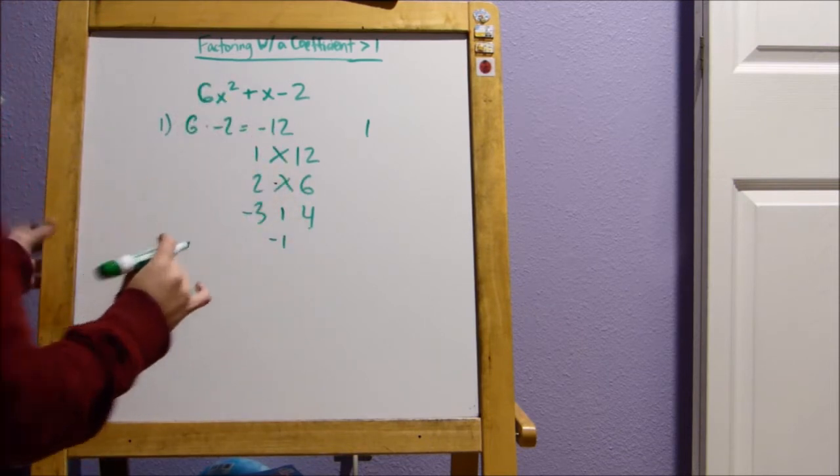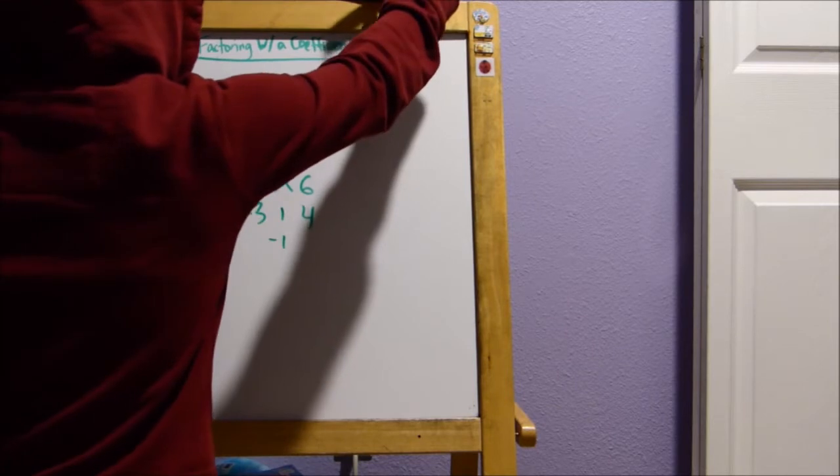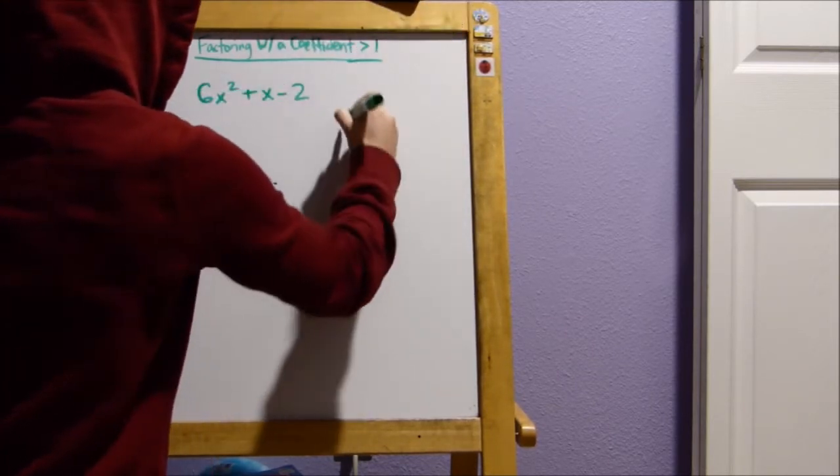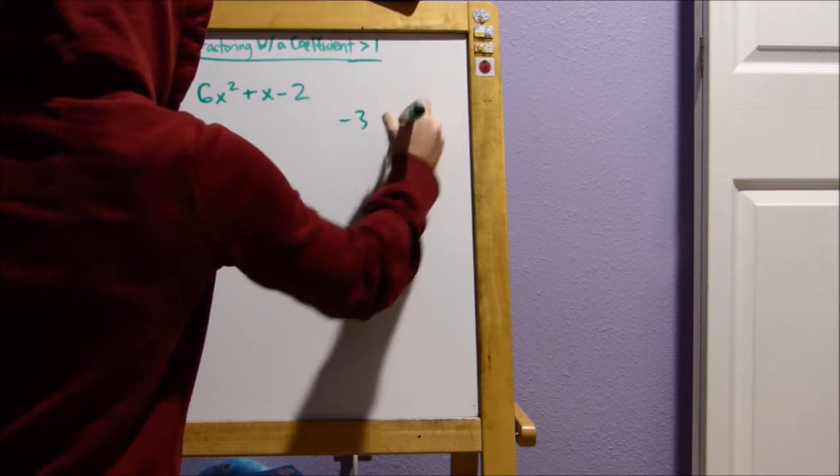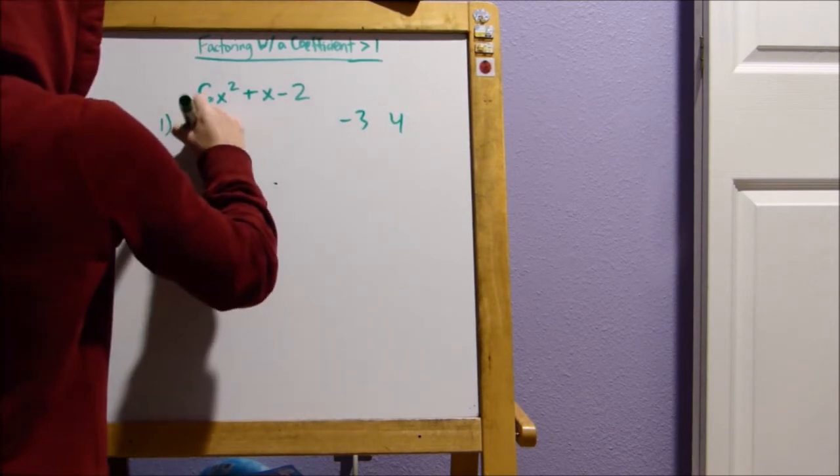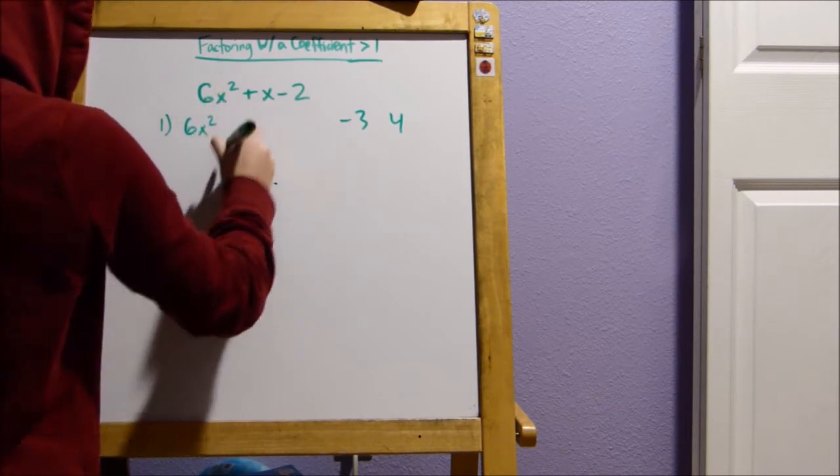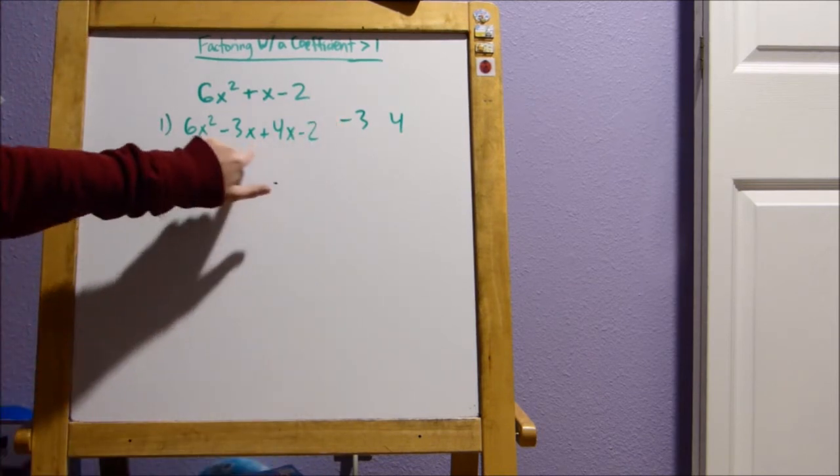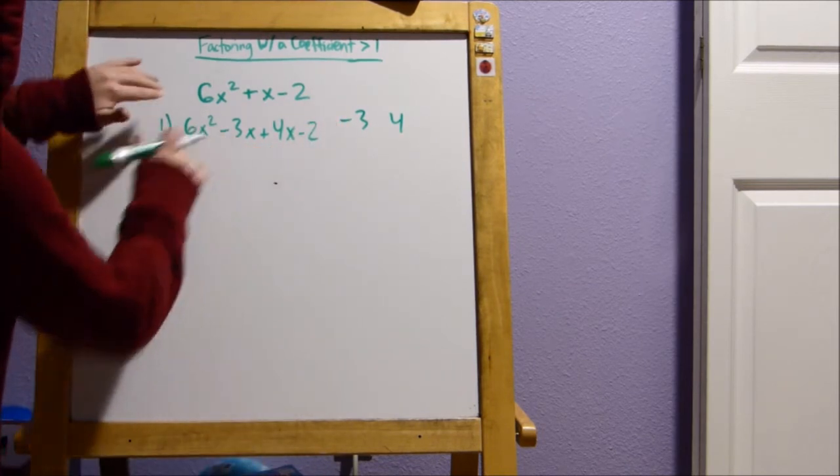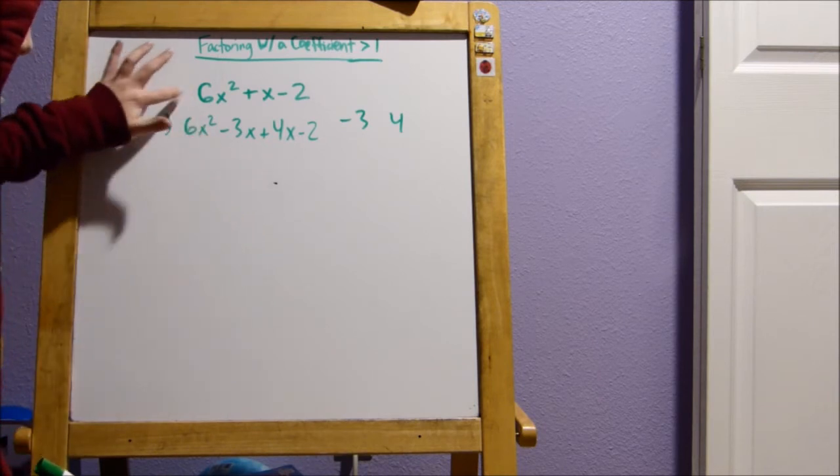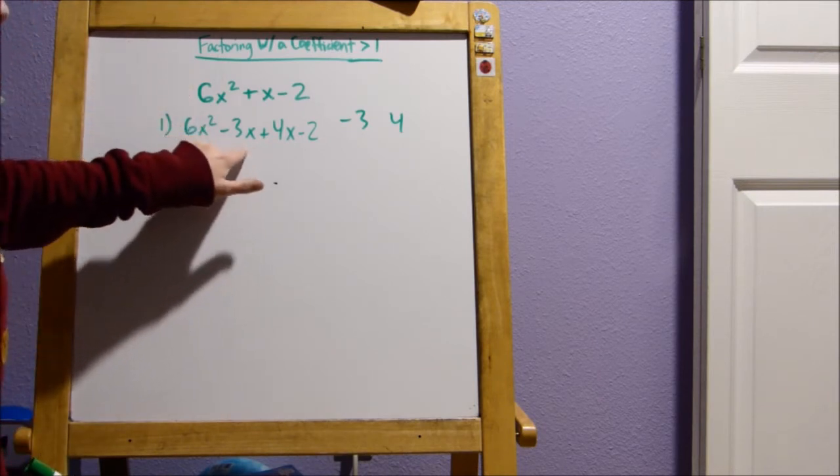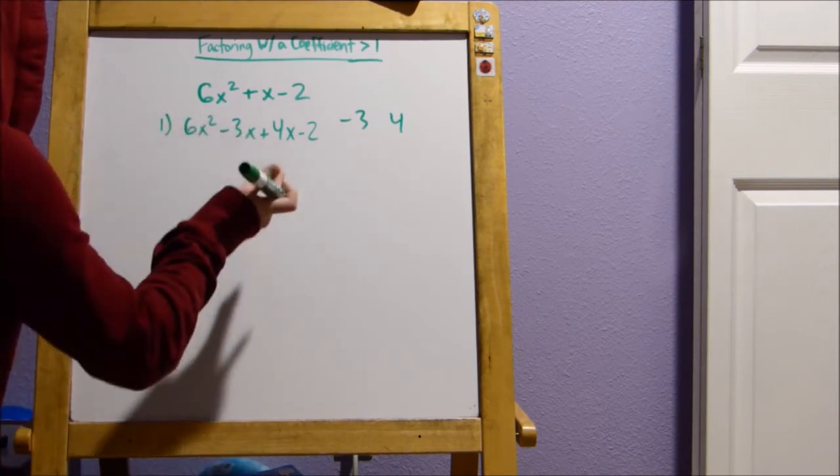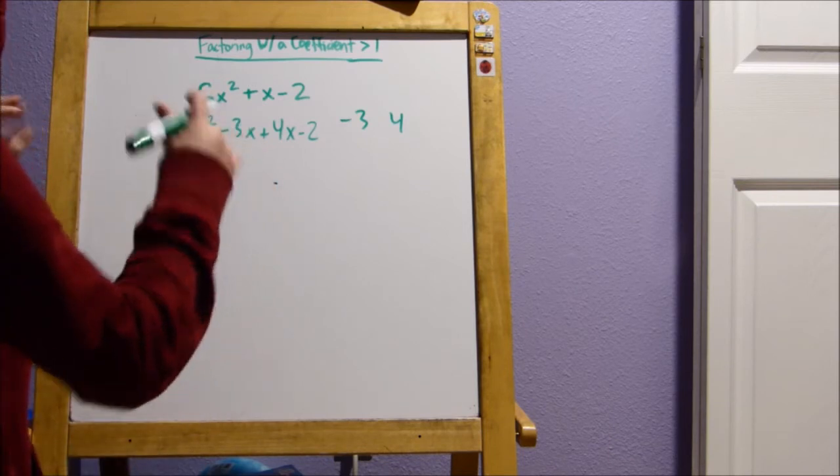So the next step that we do is we solve all of this. We figured out it's negative 3 and 4. The next step that we do is we write it out. 6x squared minus 3x plus 4x minus 2. And you can see that this is basically the same as this. It's just a little bit more simplified here because negative 3 plus 4, that's going to be 1, 1x.